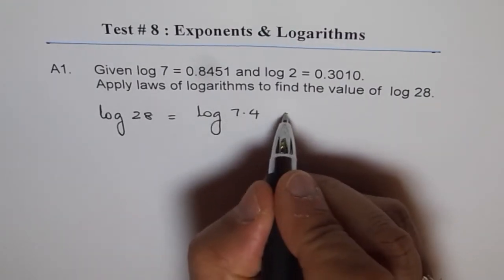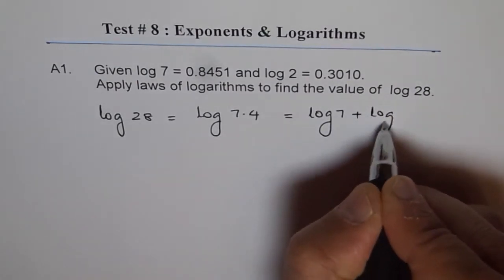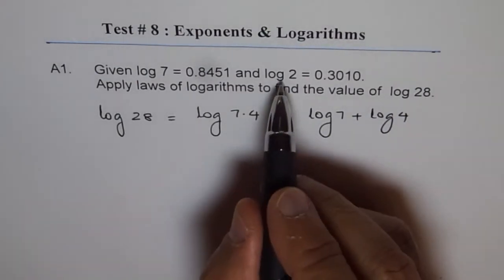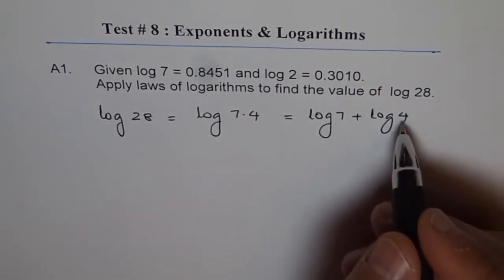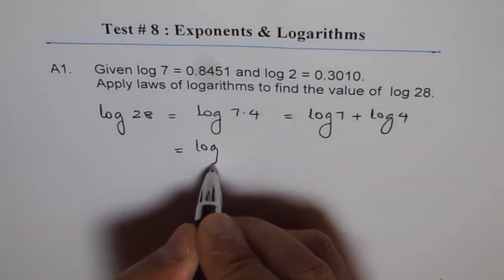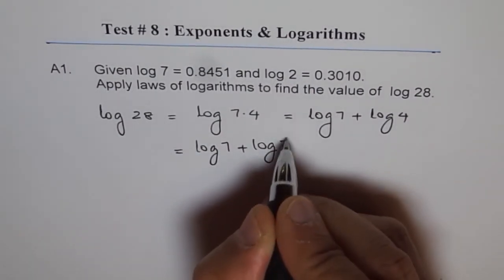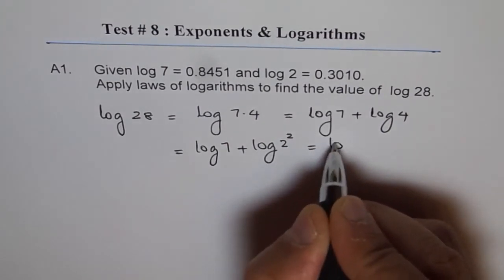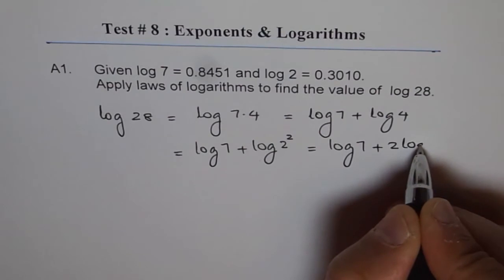7 times 4 is like log 7 plus log 4. But we know log 2, not 4. But 4 can be written as 2 squared, and therefore we can write this as log 7 plus log of 2 squared, which is log 7 plus 2 times log 2.